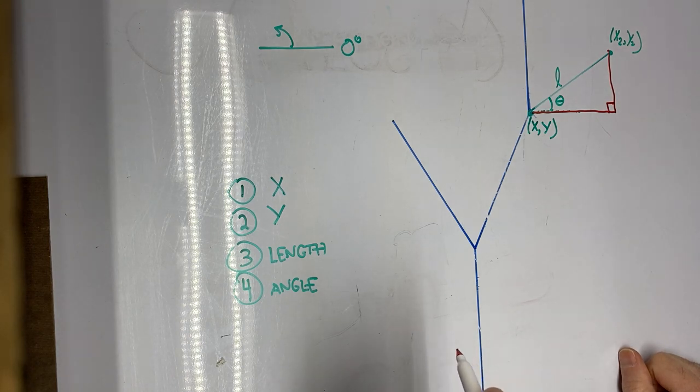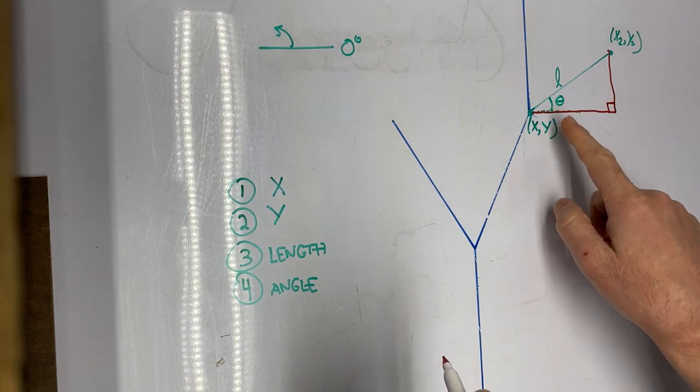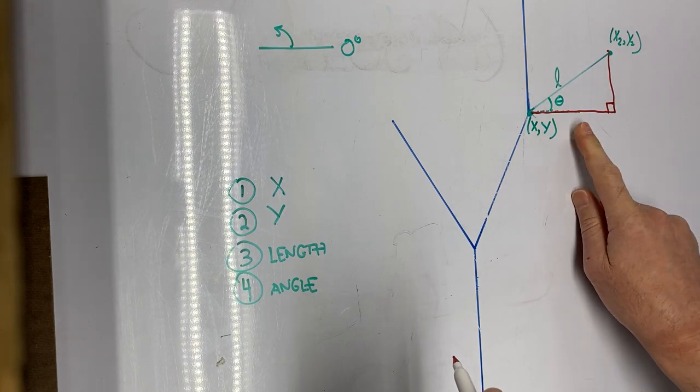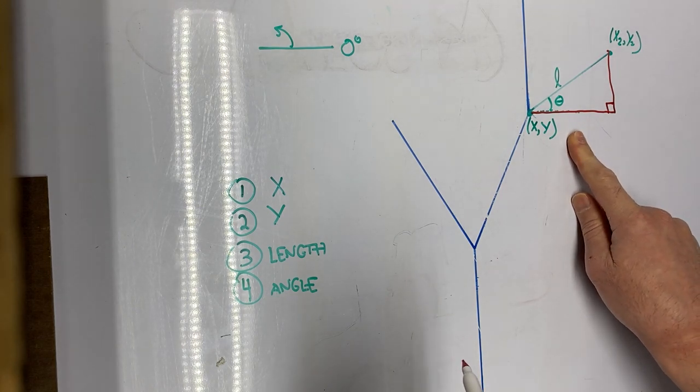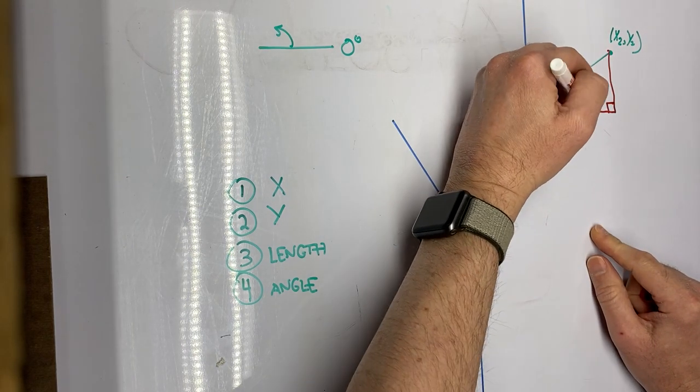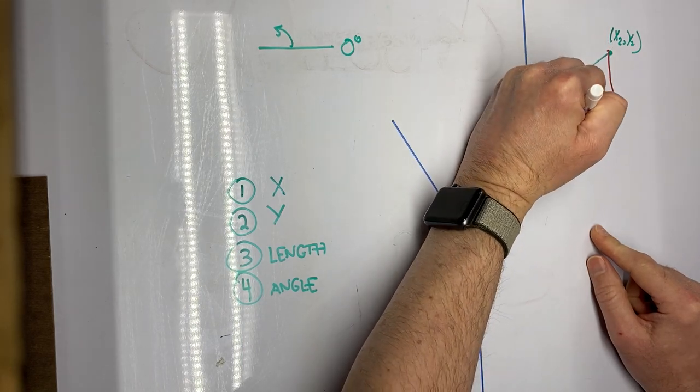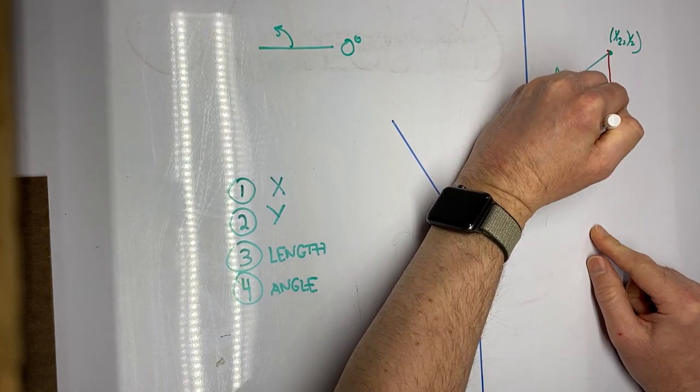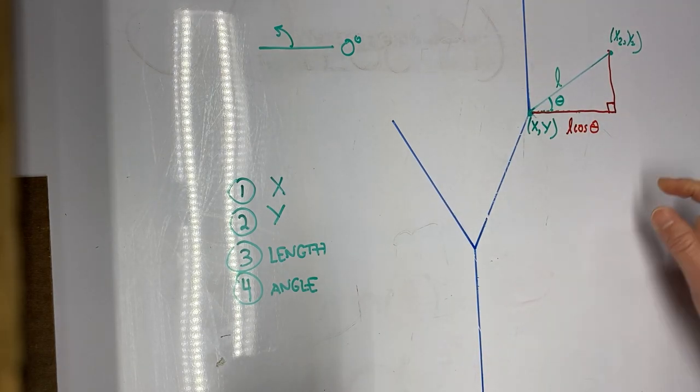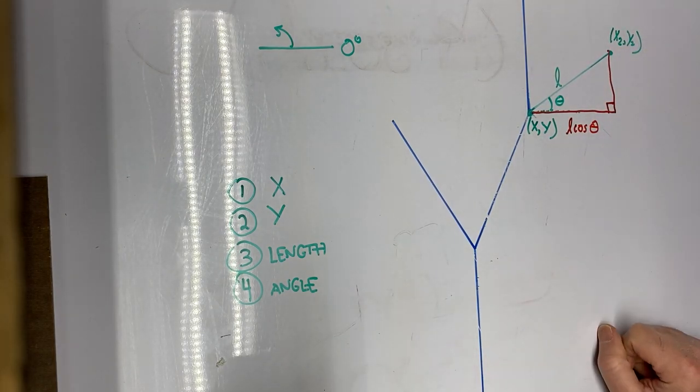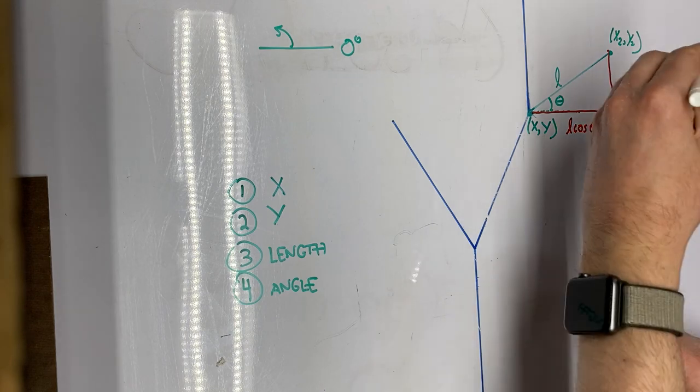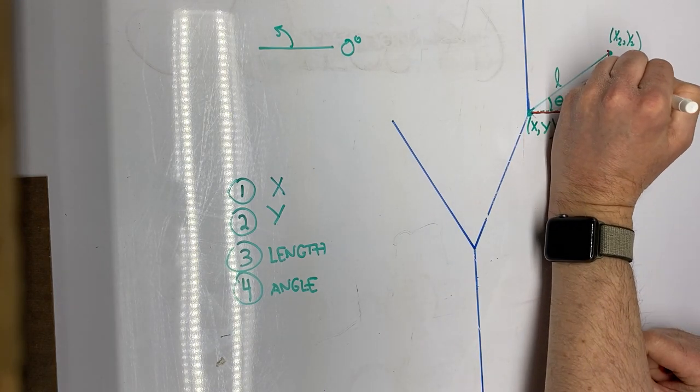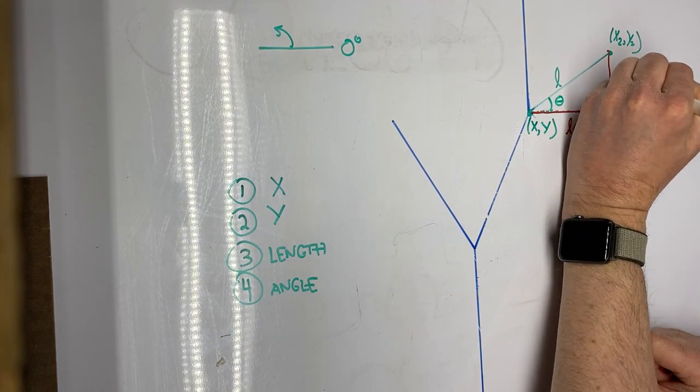So using some right triangle trigonometry, we know the length of this horizontal side, the horizontal component here is going to be the hypotenuse L times the cosine of theta. And the vertical component using our right triangle trigonometry is hypotenuse L times the sine of theta.